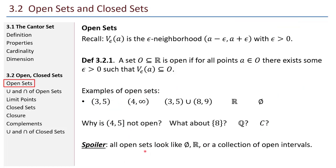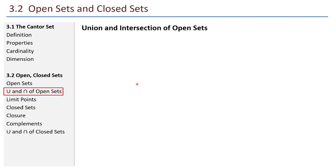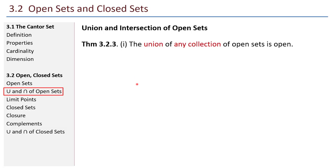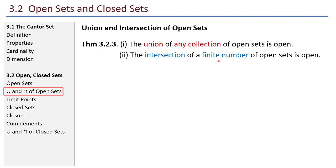Spoiler: all open sets look like either the empty set, the set of all real numbers, or a collection of open intervals. Every open set basically looks like one of these. Union and intersection of open sets — theorem: the union of any collection of open sets is open. The intersection of a finite number of open sets is open.